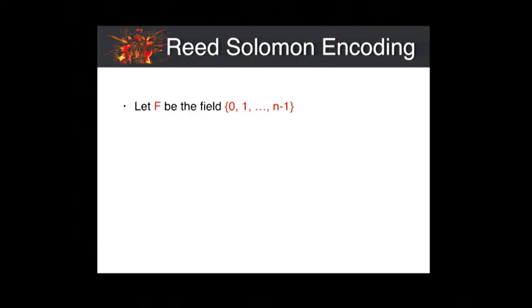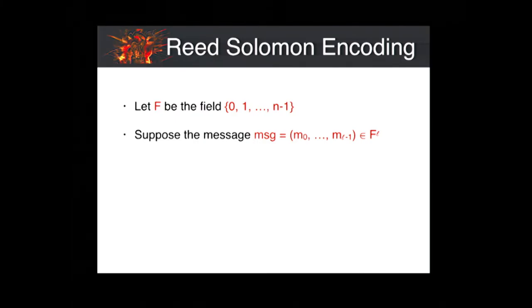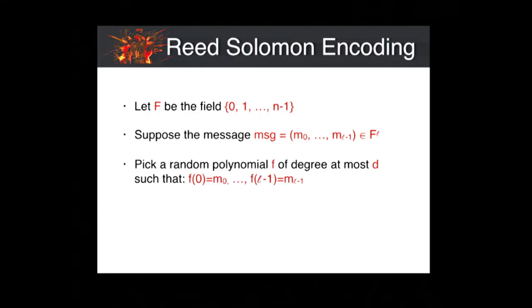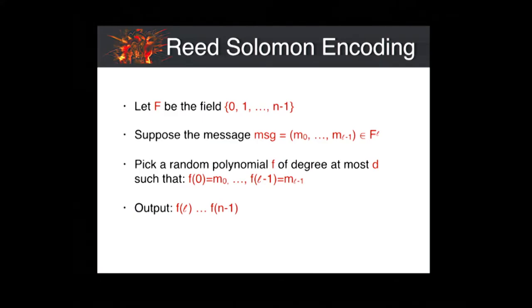The first encoding scheme is the famous Reed-Solomon encoding. Suppose we have a field F of size N and we want to encode a message M0, M1, up to M_{L-1}, an element in F^L. We choose a random polynomial f of suitable degree such that when evaluated at 0, 1, 2, up to L-1, it agrees with the message. The output is the evaluation of the polynomial f at all other points in F, that is f evaluated at L, L+1, up to N-1. We denote this RS(M0, M1, ..., M_{L-1}).